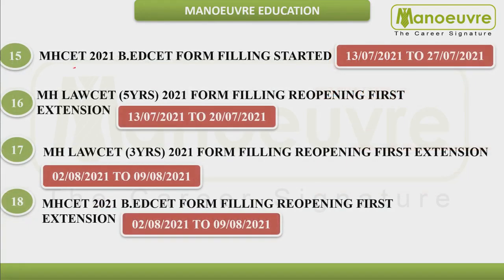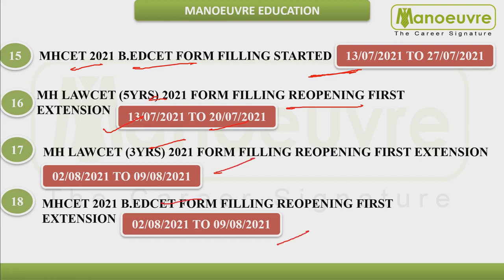The 15th event was B.Ed form filling, which started in July. After form filling, reopening also started. For MH Law CET, reopening was from 13th July to 20th July, and the same applies to the 3-year law course. For B.Ed and all other exams, reopening of form filling went into August, up to August 9th.